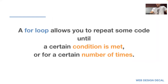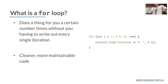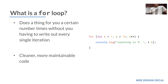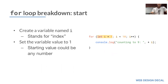A for loop allows you to repeat code until a certain condition is met, and you can repeat it a certain number of times. It does something without you having to write out every single iteration. If you want to print the numbers 1 to 100, you're not going to write console.log 1, 2, 3 all the way to 100 — that's a waste of time. For loops do it for you.